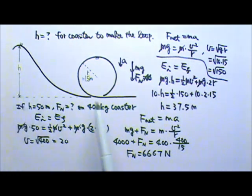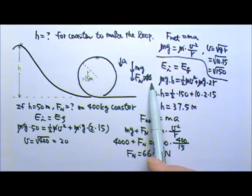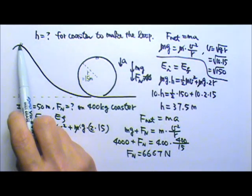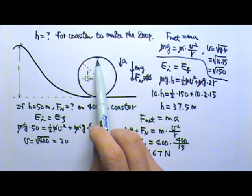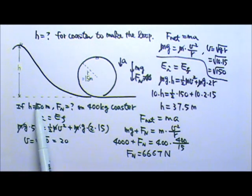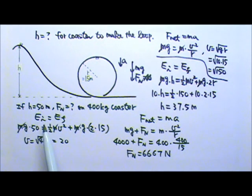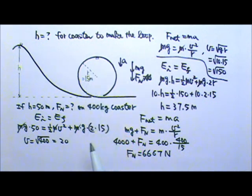So if the coaster starts at this minimum height, when it gets there it will be barely touching the loop. Normal force will be zero. If you start at greater height then the coaster will be faster over here and therefore pressing up against the track with a greater force. Of course if the track starts at 50 meters because in reality there is air resistance and friction, by the time the coaster gets here the speed will be lower. If the speed is lower that means you would not require as much normal force.